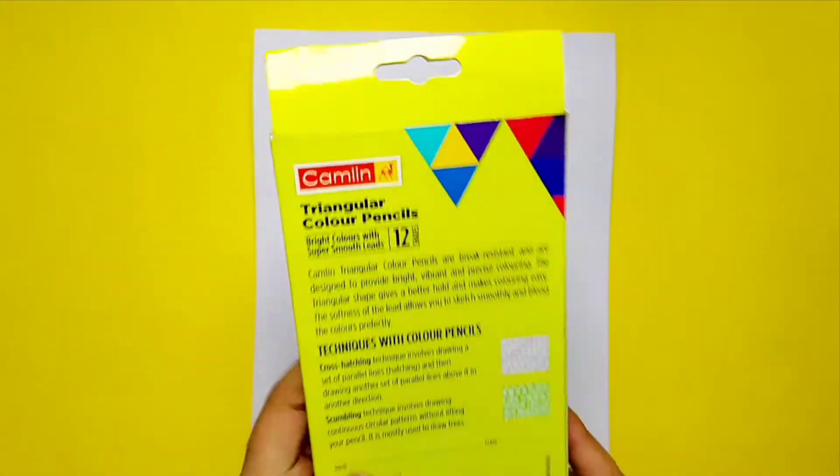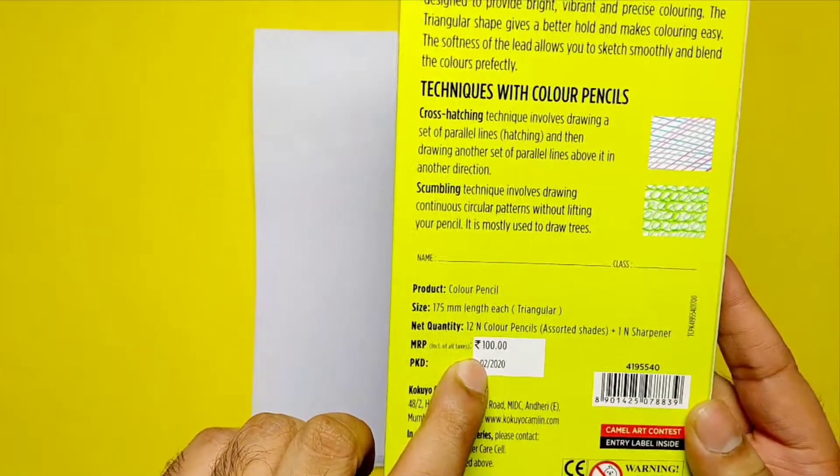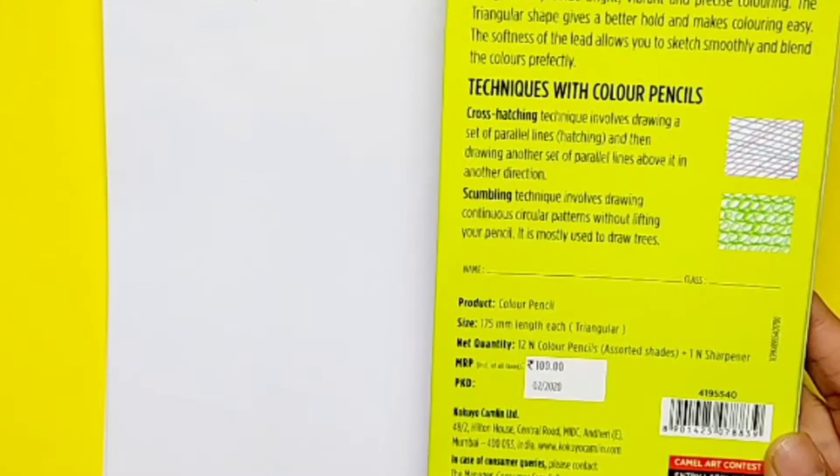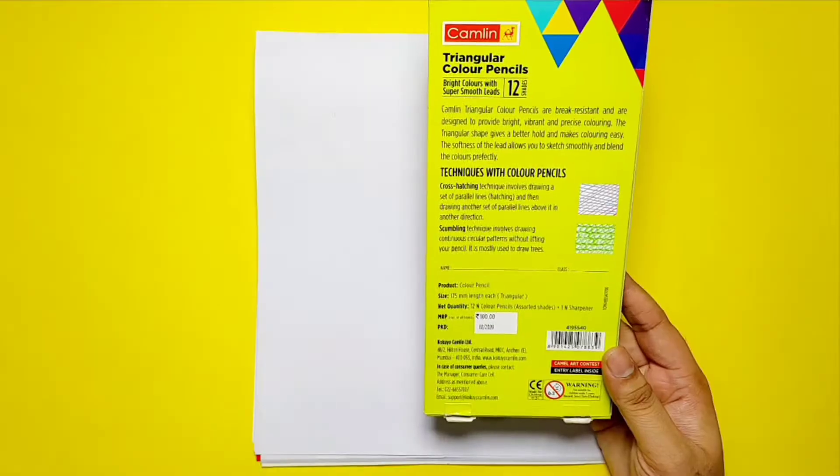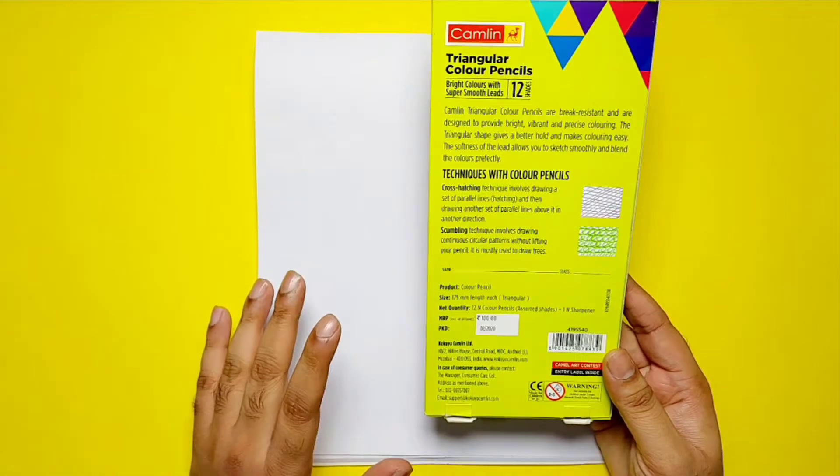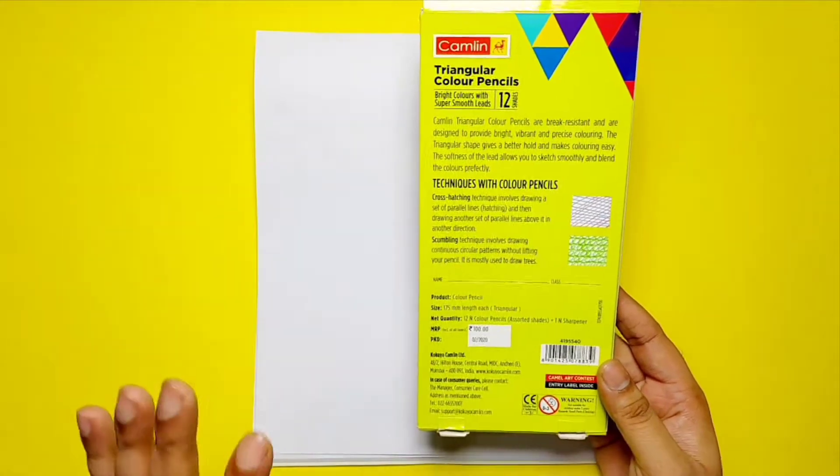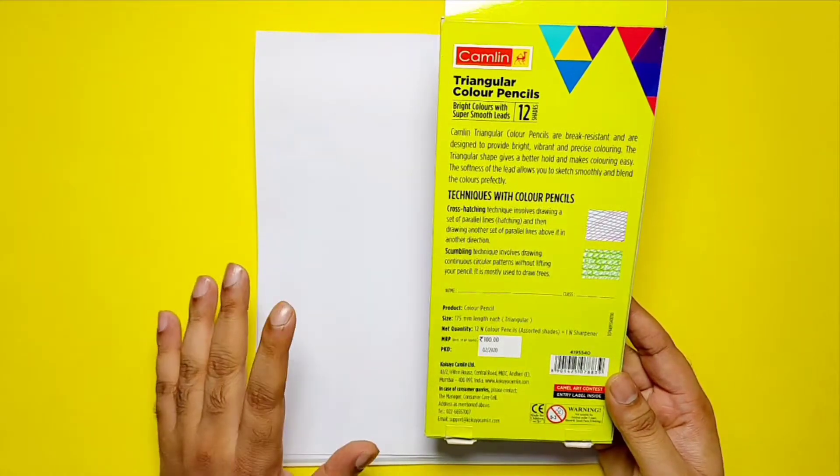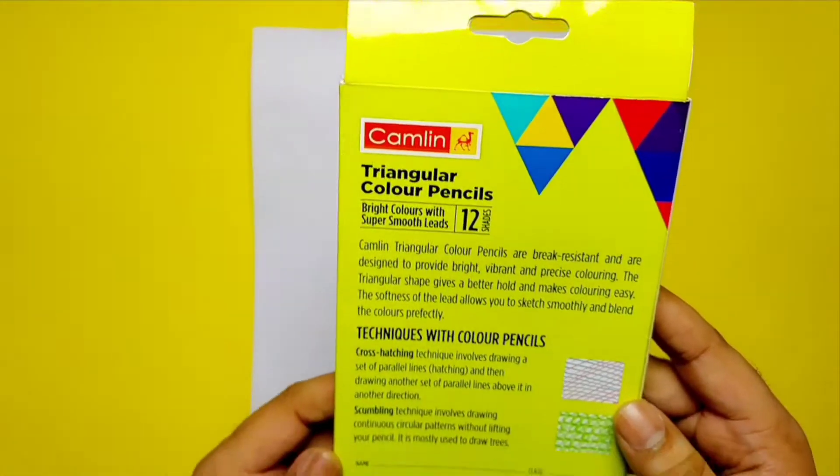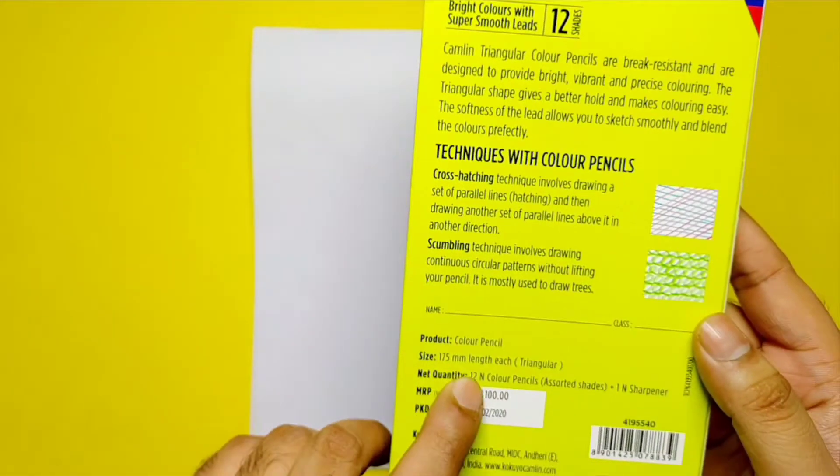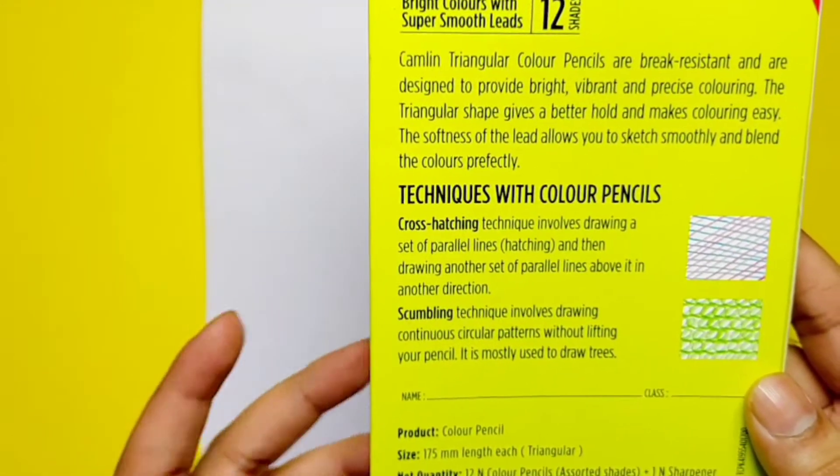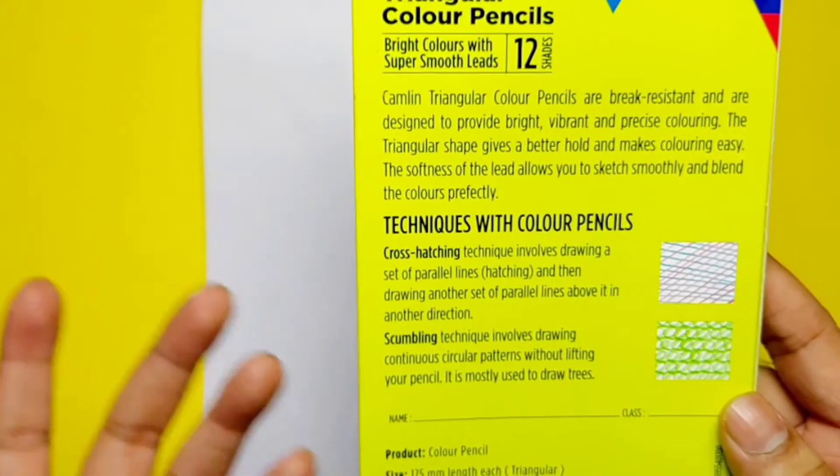The packet would come to 100 rupees, but this package is 90 rupees at stationery shops. Now let's see what are the things inside. Each triangular color pencil has 177mm length, 12 shades, and 1 sharpener.